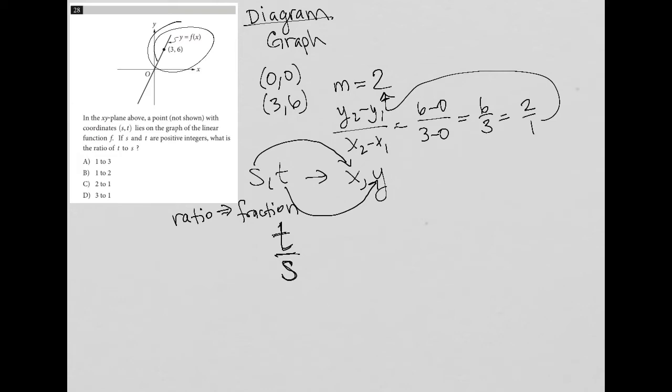So t over s, which is the same as y over x, well that's like the slope. I know the difference of y over the difference of x. But I'm thinking that this answer is just going to be 2 to 1, and that our answer here is choice C. So if I was short for time, I'd probably just go for that and move on.